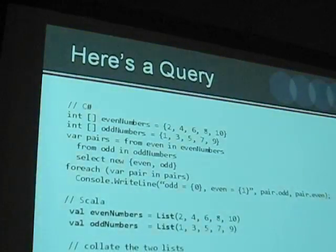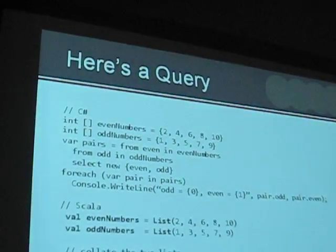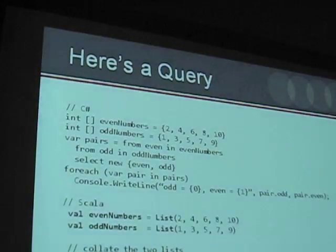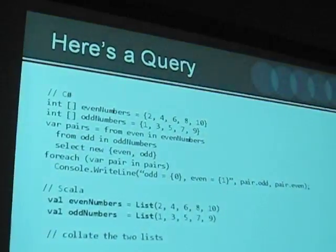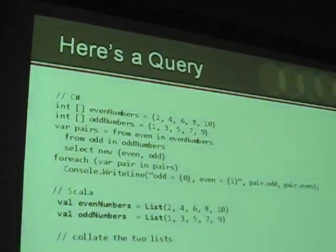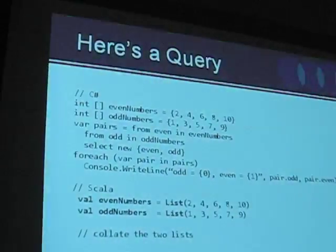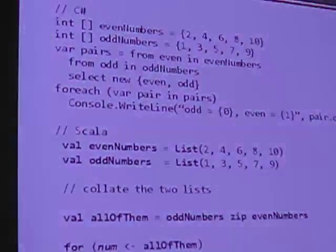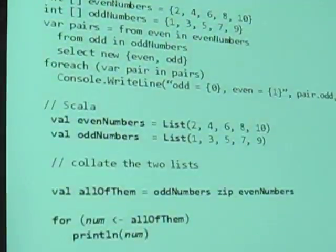It's very query-like syntax: from even in even numbers, from odd in odd numbers, select new even, odd. And then printing it out. So what I decided to do is see what we could do with Scala, and it's actually really nice and clean. Make the list and then you zip together the numbers and you get the same result.